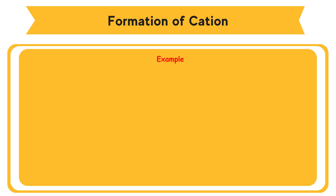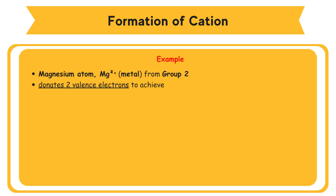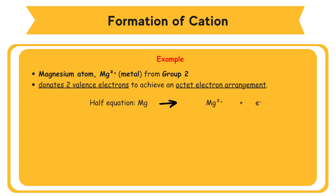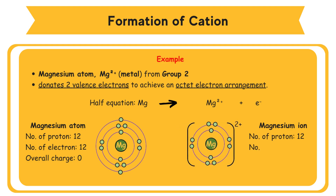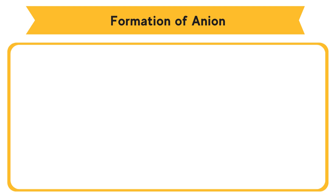Example: formation of Mg2+ cation. Magnesium atom, a metal from Group 2, donates two valence electrons to achieve an octet electron arrangement. Half equation: Mg → Mg²⁺ + 2e⁻. Magnesium atom: number of protons = 12, number of electrons = 12, overall charge = 0. Magnesium ion: number of protons = 12, number of electrons = 10, overall charge = +2.